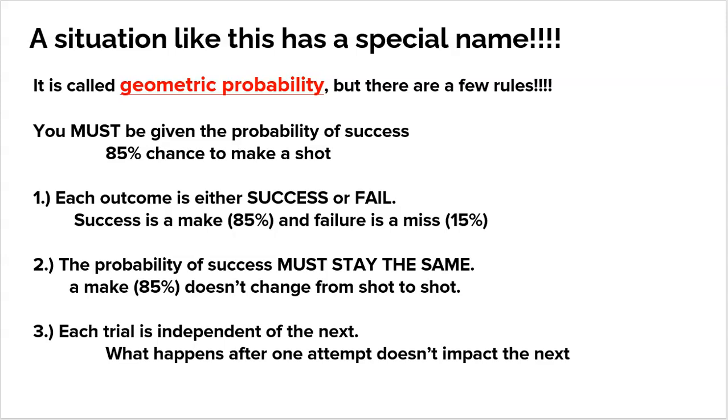If you're in a geometric probability, you got to be given the probability of success. You can't do the math if you're not given the probability of success. In this case, it's an 85% chance to make the shot, and she has a 15% chance to miss it. The other thing that makes it geometric is that we're looking for the first success.